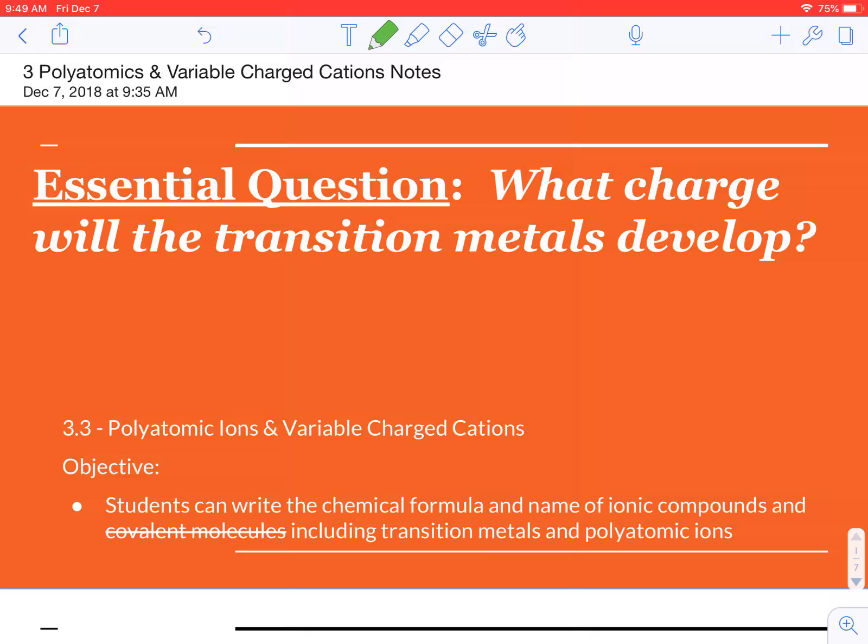If you remember, the transition metals are in the D block, or that center portion, that big rectangle in the periodic table. And so their group number is a little different. They have complicated electron configurations, so they can have different numbers of valence electrons and form different oxidation states or different charges.